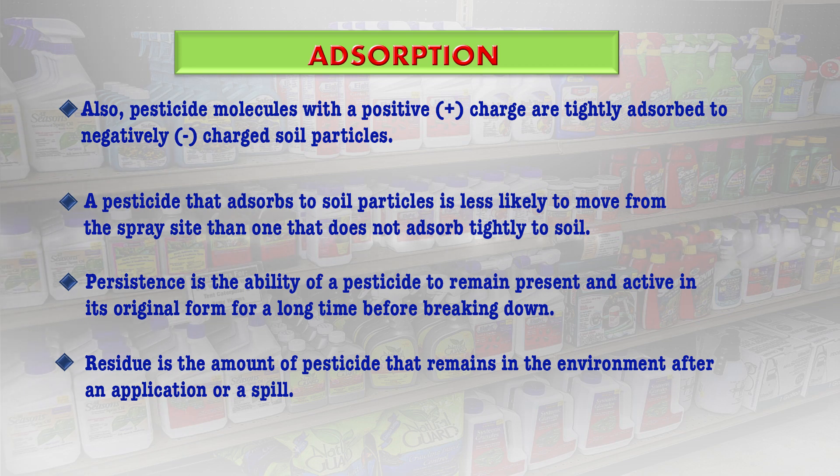A residue is desirable when it provides long-term pest control activity and reduces the need for repeated application. However, some persistent pesticides can harm sensitive plants, animals and humans. It is most important to prevent persistent pesticides from moving off-site through improper handling, application, drift, leaching or runoff.